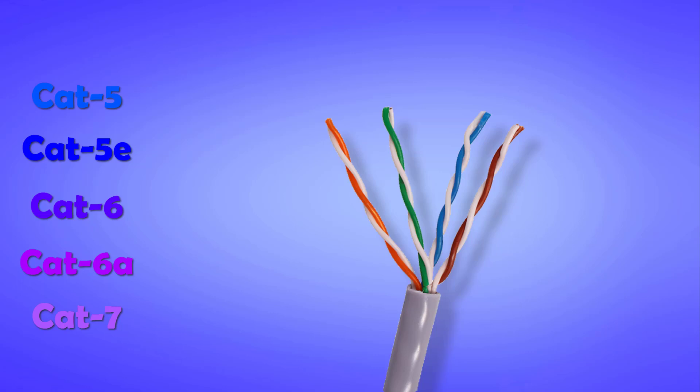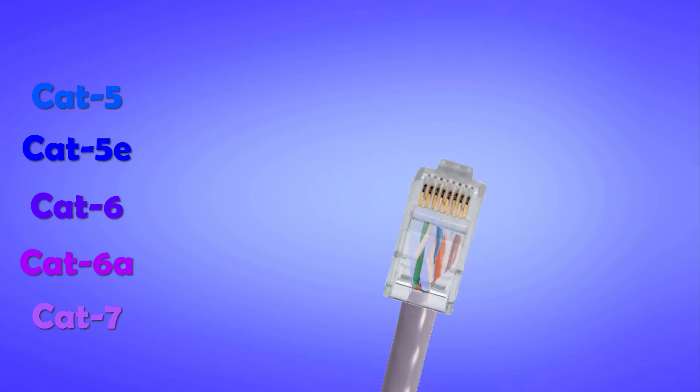Despite all the differences in these cables, the good thing is that RJ45 connectors can be fitted on all these types of cables. RJ45 stands for registered jack 45. So if you don't have any special requirement, you can put any of these cables into your small network and you'll be perfectly fine with that.